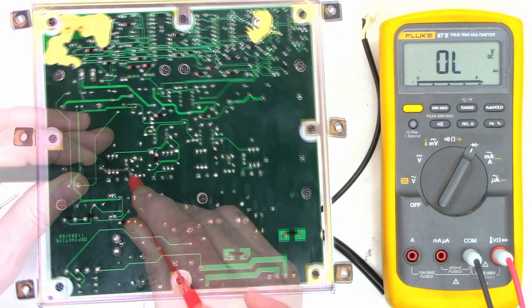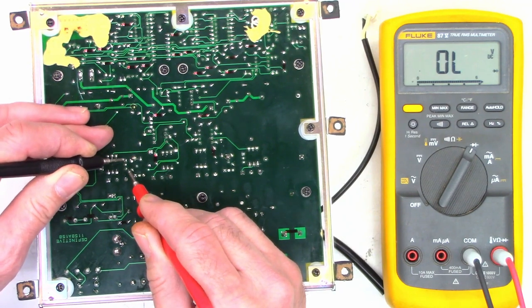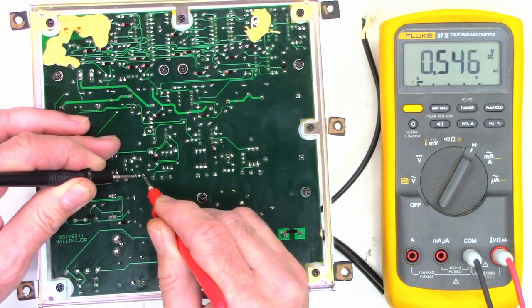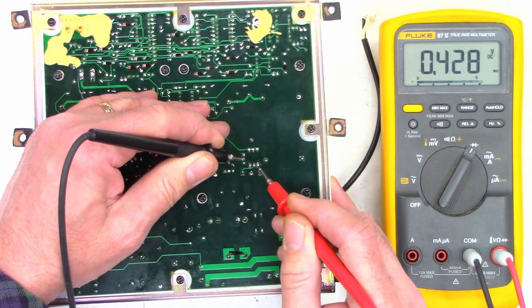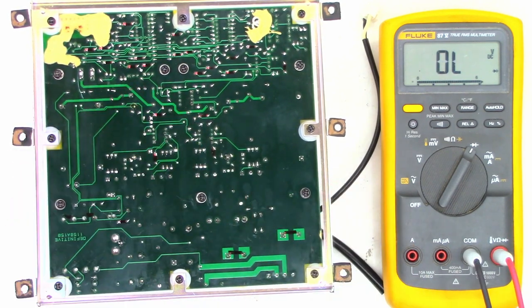Let's check those four diodes. Right now I'm only looking for junctions at this point. Good junction, good junction, good junction, and good junction. That's awesome, I don't see any shorts in the output circuit whatsoever.